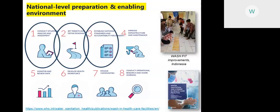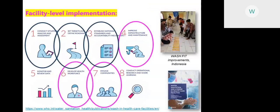At the facility level, WASH FIT is partly about improving infrastructure and maintenance. Going through the risk improvement plan helps facilities take step-by-step improvements to ultimately have more climate-resilient, better-operated and maintained infrastructure. There are also indicators within WASH FIT which specifically look at training, occupational health, vaccinations for the workforce, and continuing professional development — linking to practical step six on developing the health workforce.